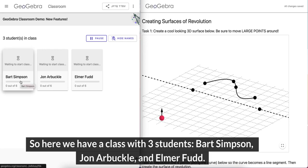So here we have a class with three students: Bart Simpson, John Arbuckle, and Elmer Fudd.